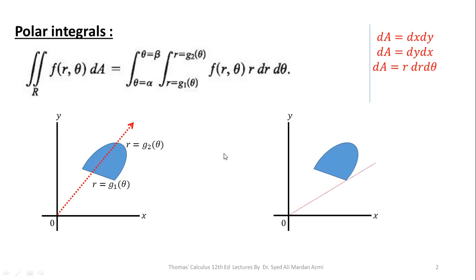Similarly, if we have to calculate the limits of theta, we will calculate the values of theta in the counterclockwise direction. From the diagram, you can see this is our starting point in the counterclockwise direction for our region and this is our ending point. The angle through which our region starts will give you the lower limit of theta, and the ending angle of our region in the counterclockwise direction will give you the upper limit of theta. So the limits of theta are alpha to beta.